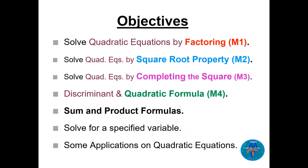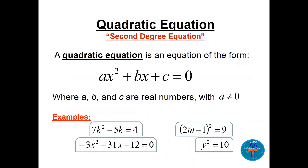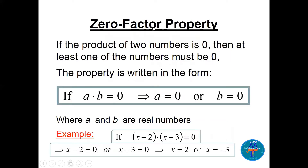After that we will see three related topics: sum and product of solutions, solve for a specified variable, and one or two examples on applications of quadratic equations. So what is a quadratic equation? It's a second-degree equation. The form is ax squared plus bx plus c equals zero, where a, b, and c are real numbers. Here are four examples.